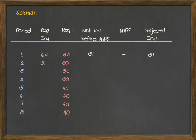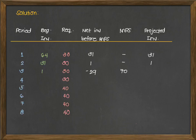The net inventory before MPS for period 2 is 31 minus 30, which equals 1. No value for MPS, and the projected inventory going into the next period is 1. Beginning inventory for period 3 is 1, and 1 minus 30 is negative 29. This is when we write a value under the MPS column. We have an MPS value of 70 as given in the problem. The projected inventory is negative 29 plus 70, giving 41 units, carried over to period 4.